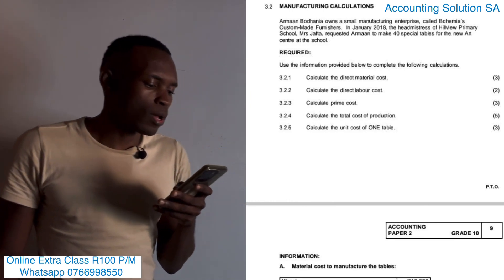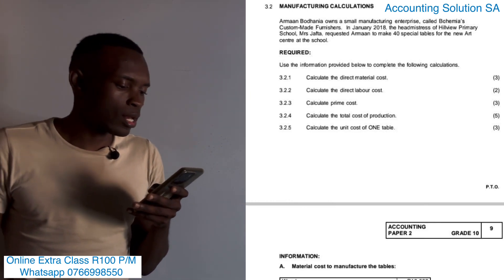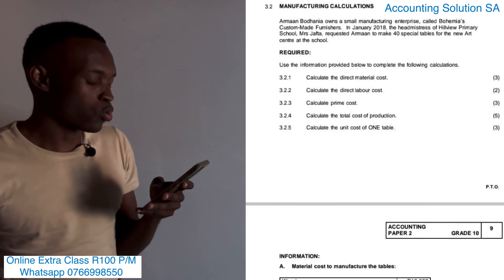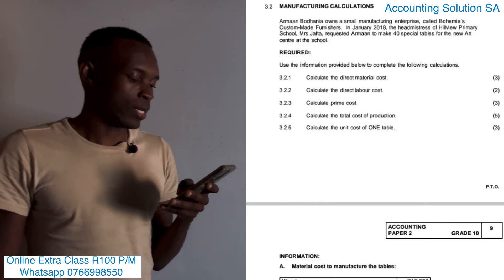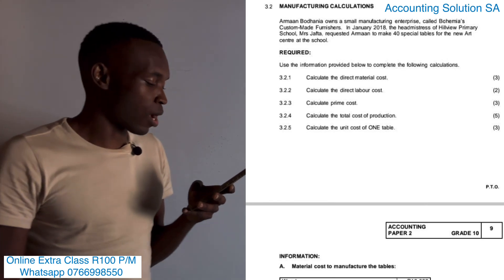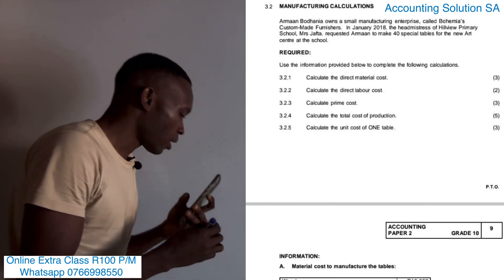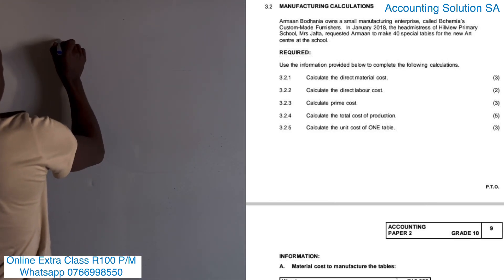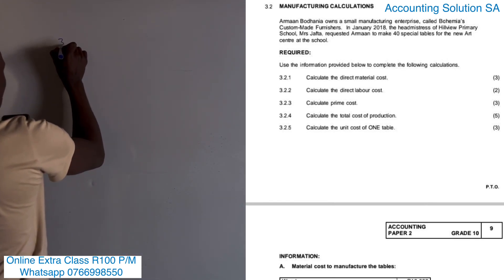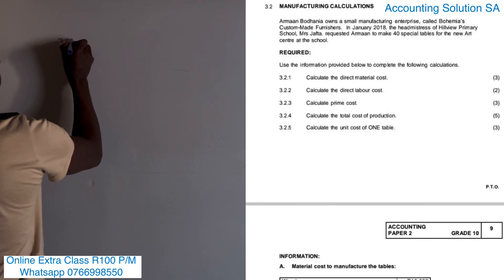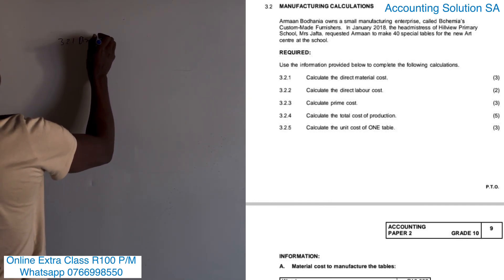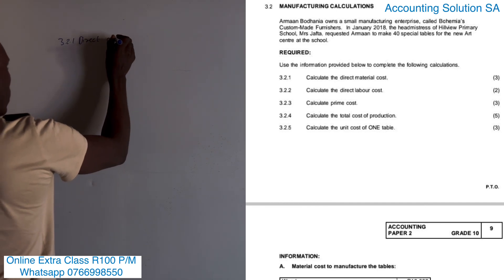We are required to use the information provided to complete the following calculations: direct material cost, direct labor cost, prime cost, total production cost, and cost per unit. Let's start with 3.2.1 — we have to calculate the direct material cost.